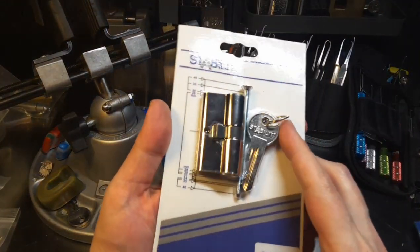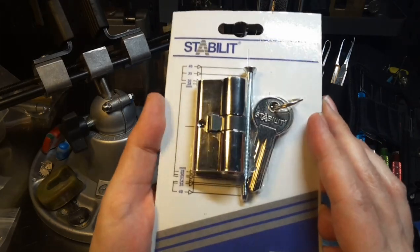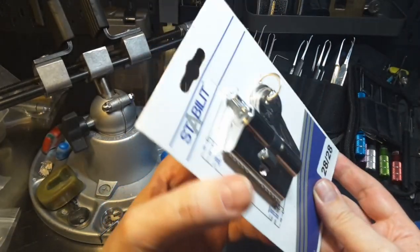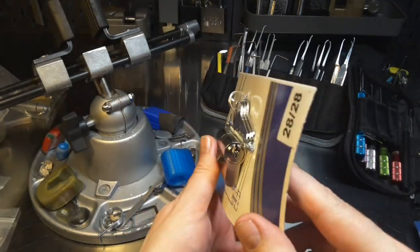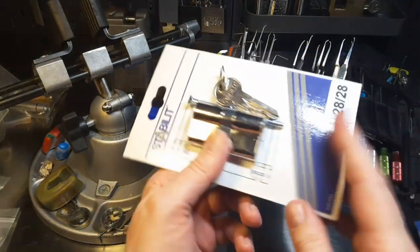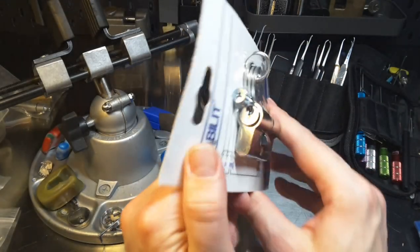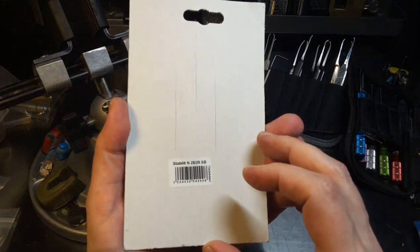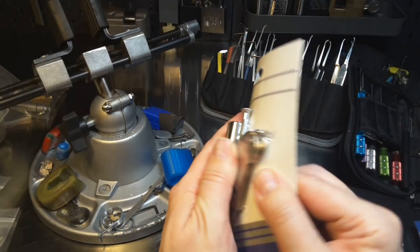Today I want to pick a lock out of the package. I have here this very cheap Stabilit Eurocylinder that I got from the local hardware store when I was buying some screws for our new bookshelf. So I thought, let's get a lock to pick it out of the package.